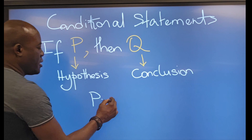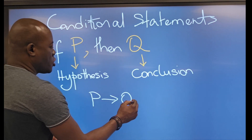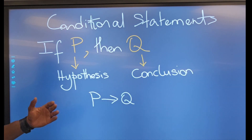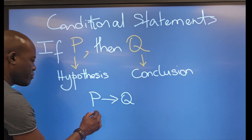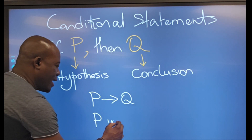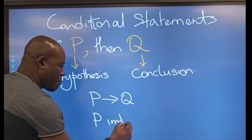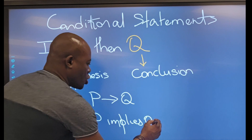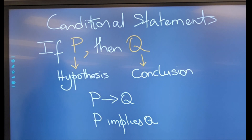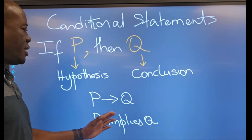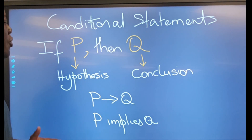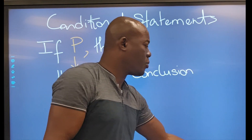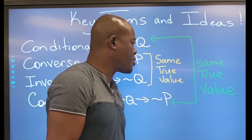In terms of symbolism, if p then q means that p implies q. So let's see some key terms that we will come across as we go.